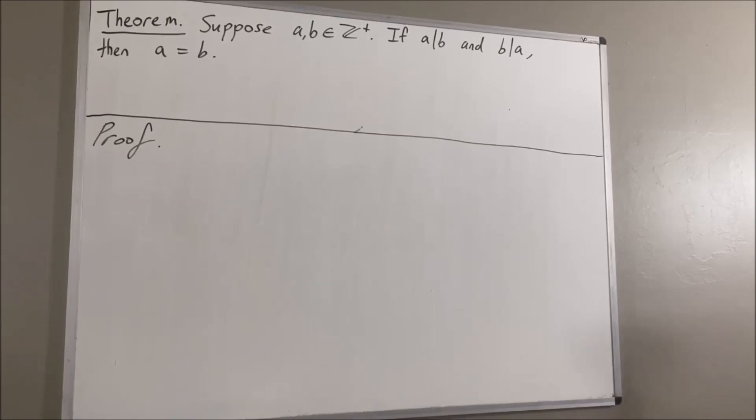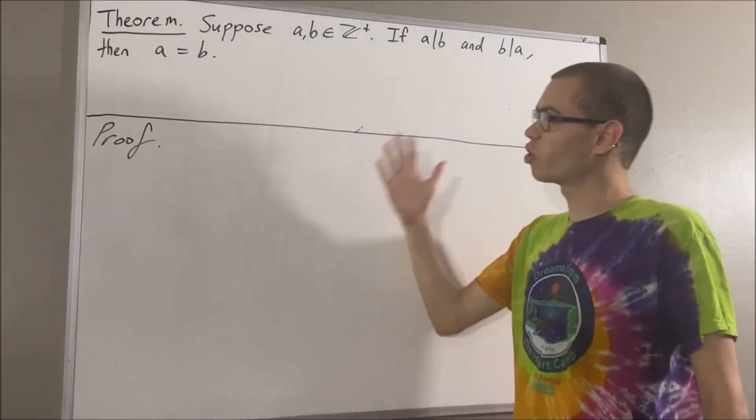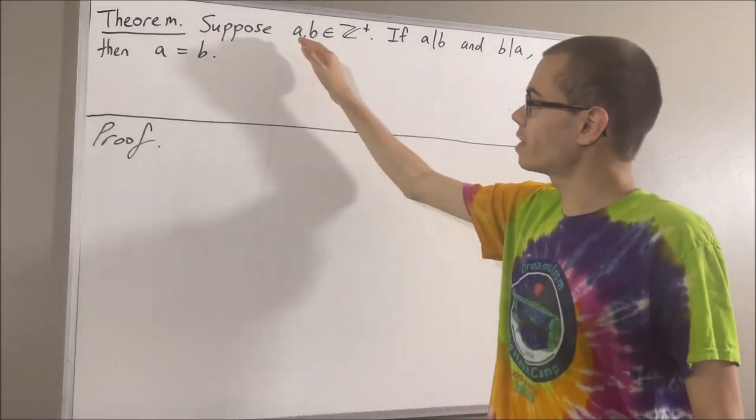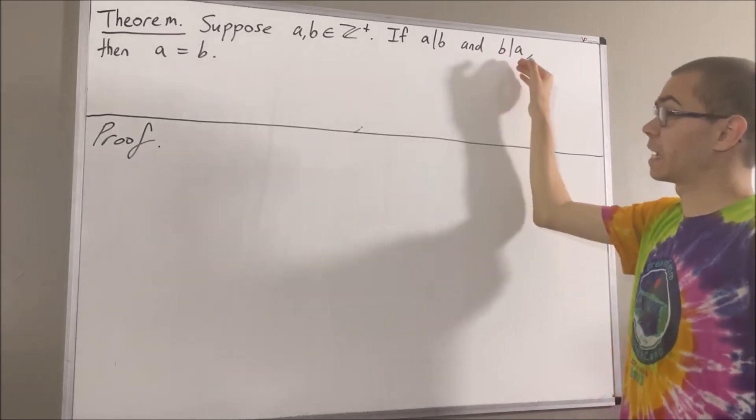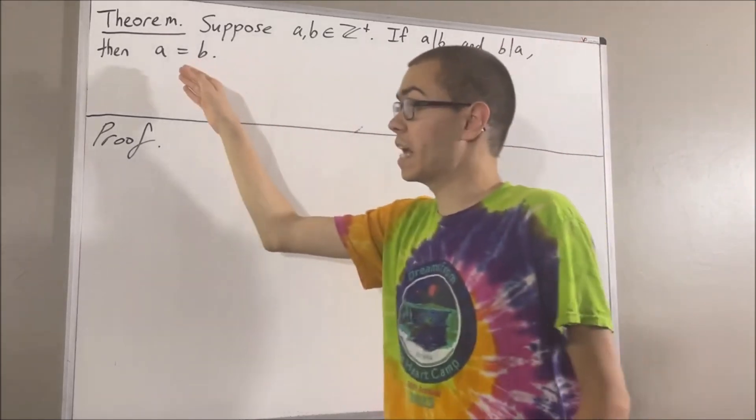Hello! In this video, we are going to prove the following theorem. Suppose A and B are positive integers. If A divides B and B divides A, then A is equal to B.